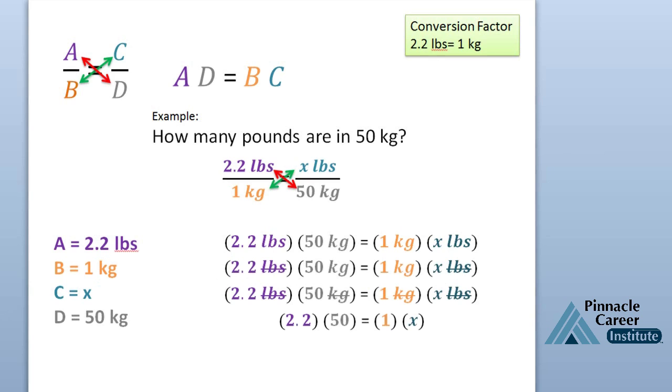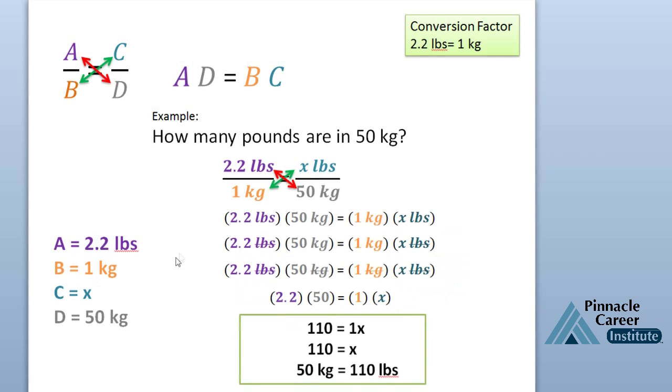I'm going to rewrite that without the pounds and without the kilograms. So we have 2.2 times 50 equals 1 times x. 2.2 times 50 is 110, and 1 times x is 1x, which is also x. So basically we have just said that 50 kilograms equals 110 pounds.